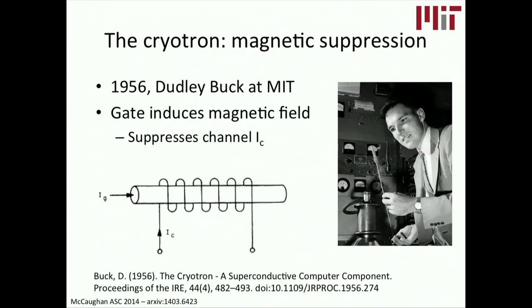The field of superconducting electronics started out with this device, the Cryotron, which was actually a four-terminal device based on two superconducting wires, one wrapped around the other. It was invented in the 1950s by Dudley Buck at MIT. The way these wires worked was current was pumped through the coiled wire, it would induce a magnetic field, and that magnetic field would suppress the superconductivity and the critical current of the through wire.